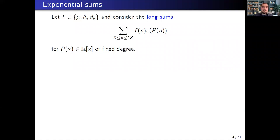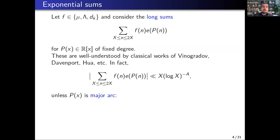To understand short exponential sums for any of these functions, it helps to first review what's known about long sums. These long exponential sums with polynomial phase twists are well understood by classical works of Vinogradov, Davenport, and Hua from the 1930s, who studied the Waring-Goldbach problem. In particular, for any of these functions one can get arbitrary power-of-log cancellation in the long exponential sum, unless the polynomial is major arc in a certain sense.